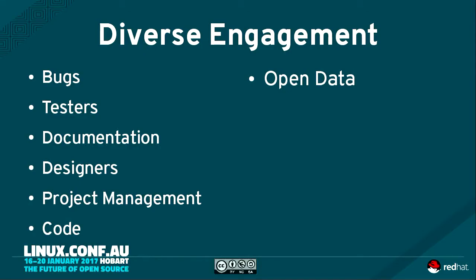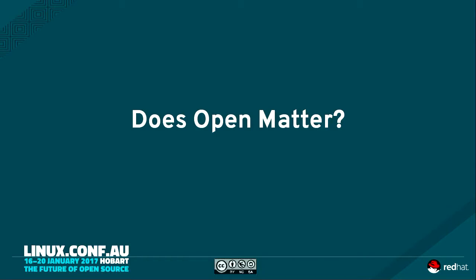There are lots of other ways to be involved. Open data — is it possible to make your data accessible through things like open APIs? Can you create interoperability through open APIs and open standards? Coming back: does open matter to you? Does open matter to the groups you work with, the organizations, activism, things like GovHack? Open, we think, matters.